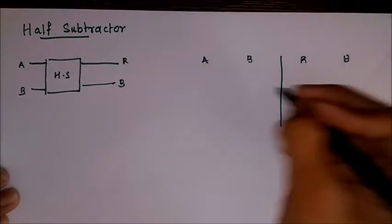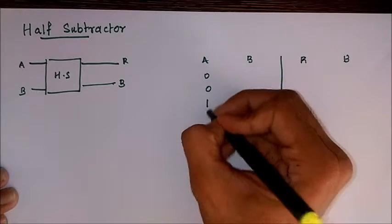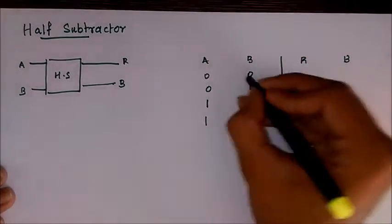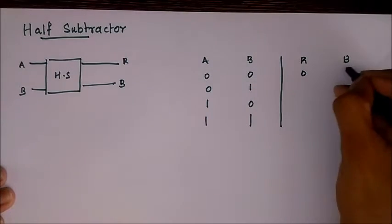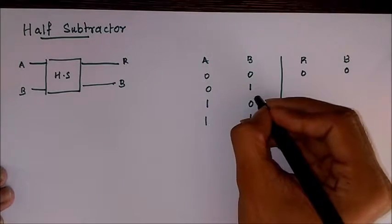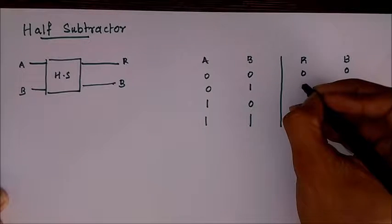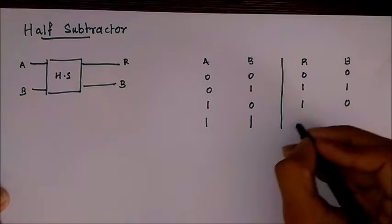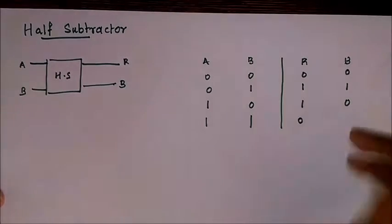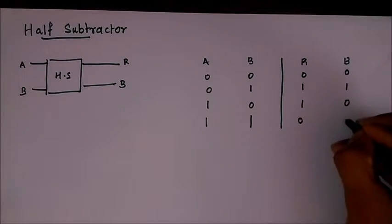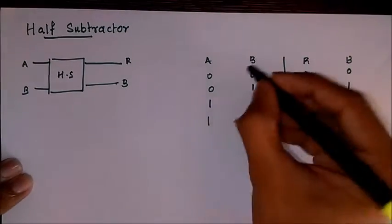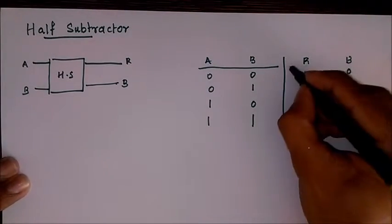Now the difference: zero minus zero is zero and borrow is zero. Zero minus one, we get a difference one with the borrow one. One minus zero is one, the borrow is zero. One minus one is zero, the borrow is also zero. If you know binary subtraction, this is how we obtain the truth table.